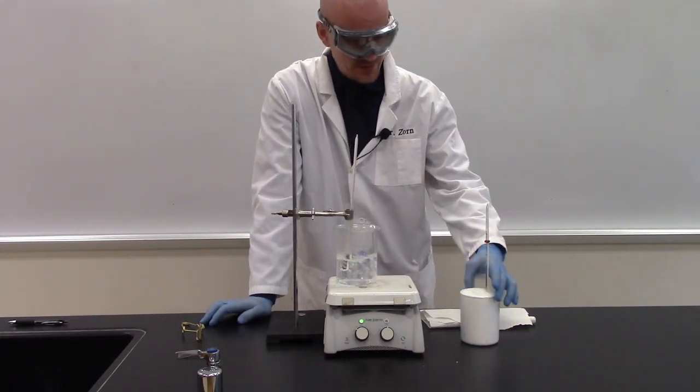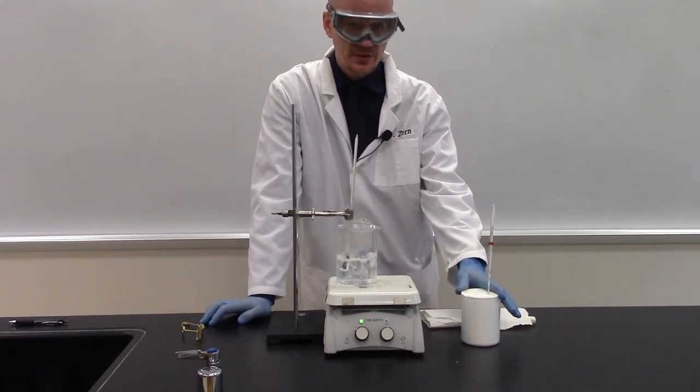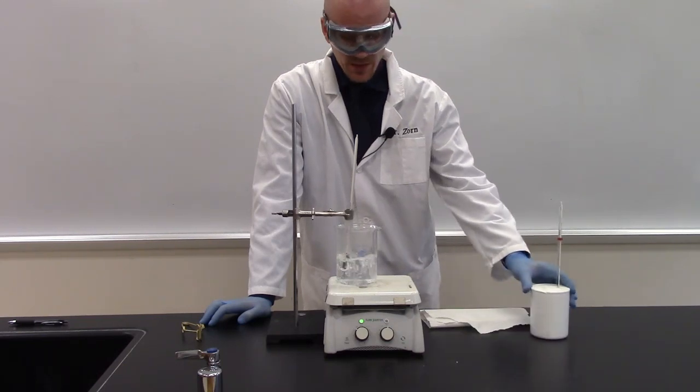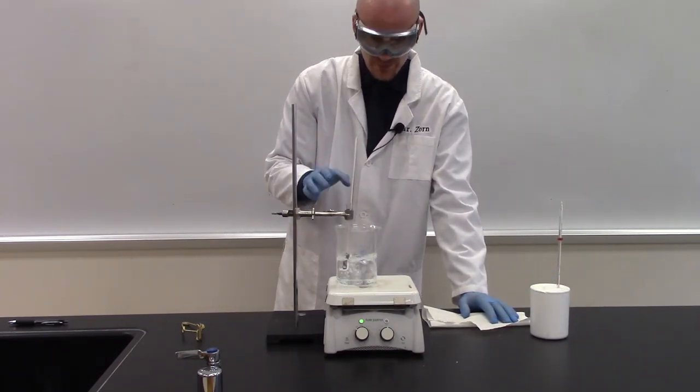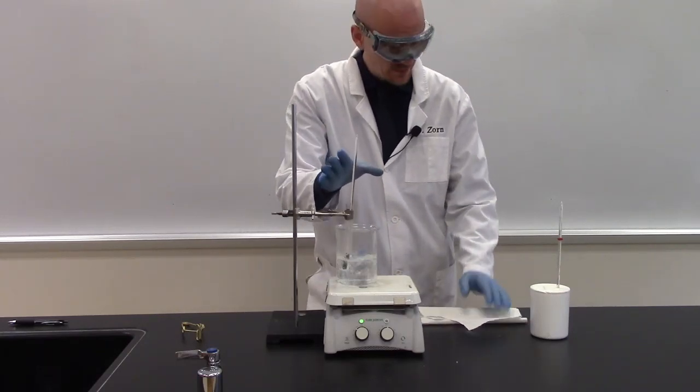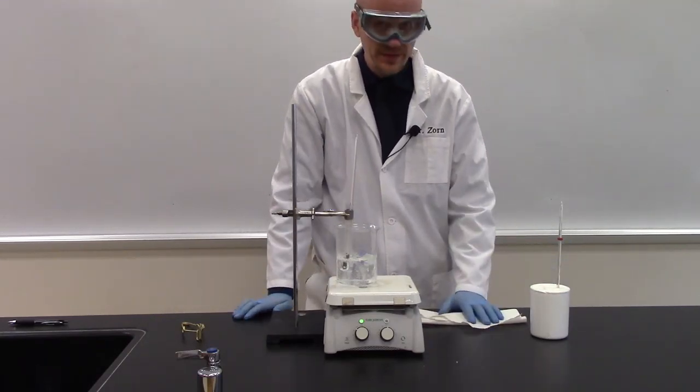So what you need to do first is note the temperature, the starting temperature of the calorimeter, and then you want to also note the temperature of the metal. So I've got my starting temperature of the metal and my starting temperature of the calorimeter.